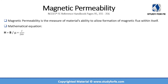Magnetic permeability is the measure of a material's ability to allow formation of magnetic flux within itself, which basically allows it to store energy in the form of a magnetic field. This is similar to electrical permittivity, which was the ability of a material to store energy in the form of an electric field.